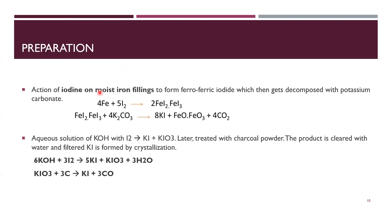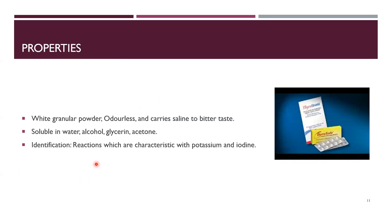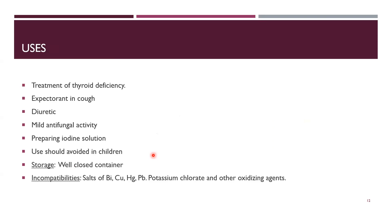Potassium iodide is prepared using moist iron filings which give ferroferric iodide, and with potassium carbonate we get potassium iodide. Secondly, potassium hydroxide reacted with iodine also gives potassium iodide. It is a white granular powder, odorless, with a saline to bitter taste, soluble in water and alcohol. It is used for treatment of thyroid deficiency, as an expectorant, and as a diuretic. Storage is in well-closed containers.